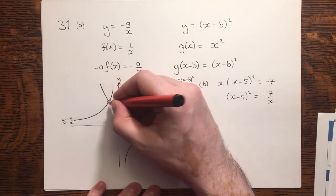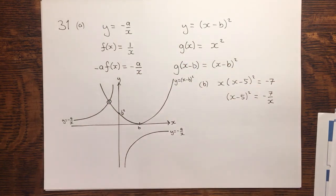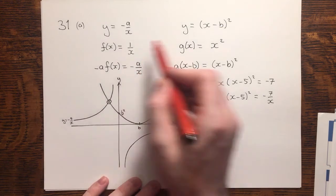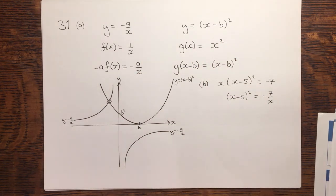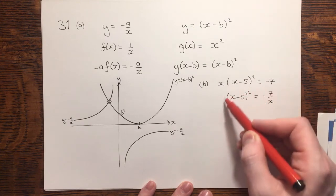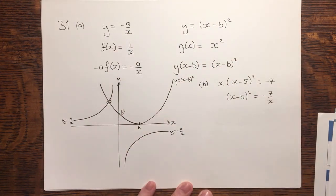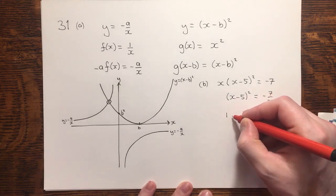Since this intersection would be as a result of these two equations being made equal to each other, or rather this expression and this expression being made equal to each other, we can conclude from the fact that this is in the form of those two being made equal to each other, that there would be one solution.